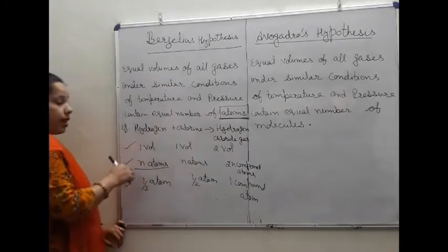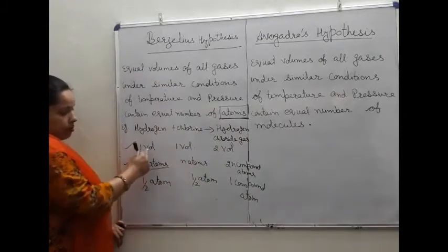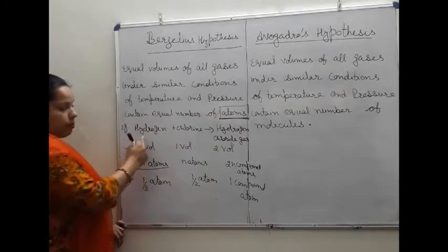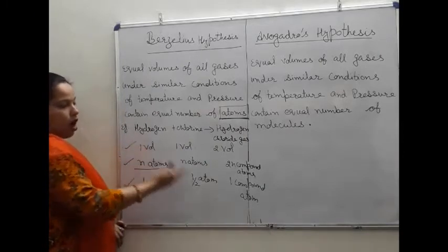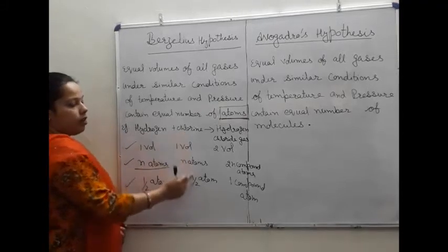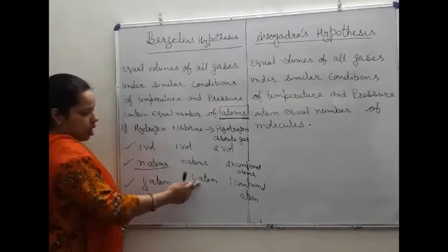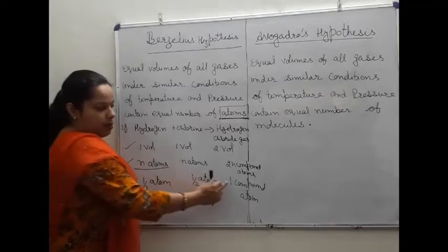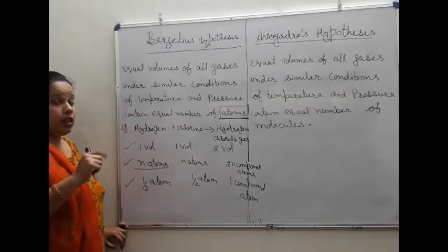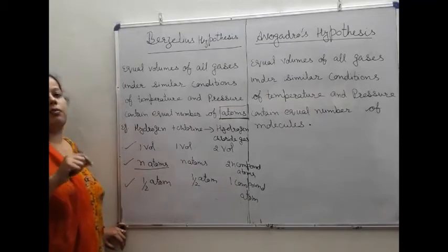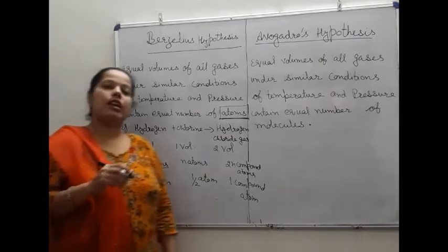Now, if we say that equal volumes have the same number of atoms, and half atoms are present in one volume of hydrogen gas, then half atoms are present in one volume of chlorine gas. So half and half atoms are present in one compound atom. But according to Dalton, atoms are indivisible. Dalton said that atoms are indivisible.